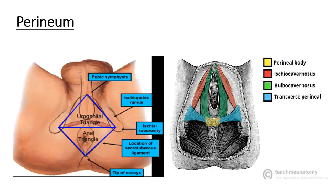Let's take a look at the boundaries of the perineal compartment. If you put the patient in the supine position on the medical couch, flex the legs at the knee joint, with slight flexion at the hip joint of the thighs as well, and then separate the two thighs, you will see this view. In this view, you can see that the perineal region is diamond-shaped.